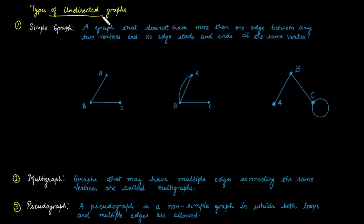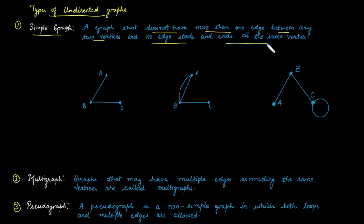The next is a type of undirected graph. The first case is a simple graph. A simple graph means a graph that does not have more than one edge between any two vertices and no edge starts and ends at the same point. This means no self-loop is present in a simple graph, and multiple edges are not allowed.